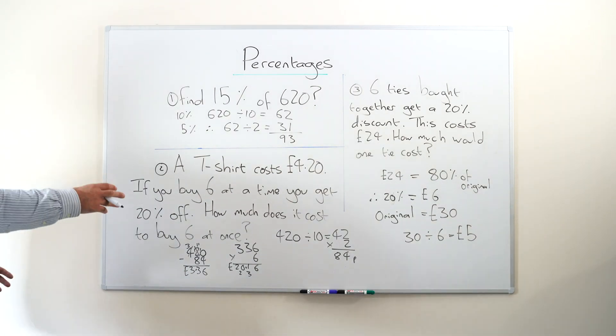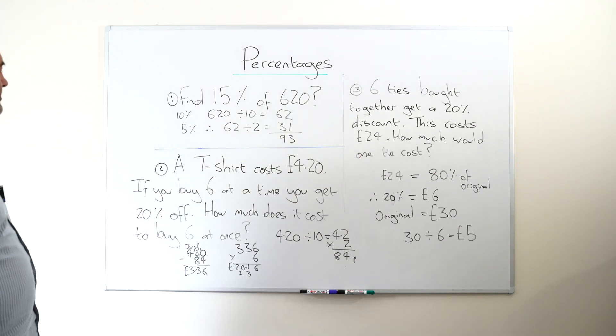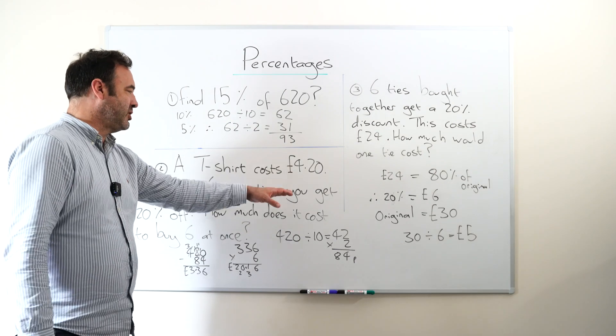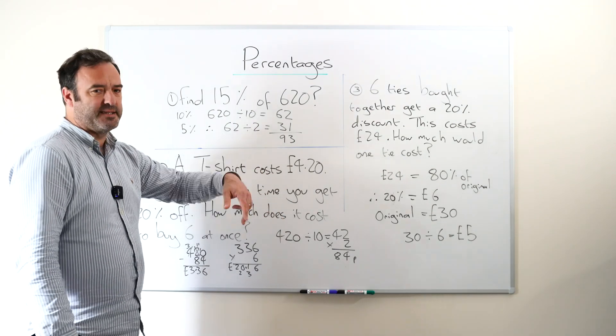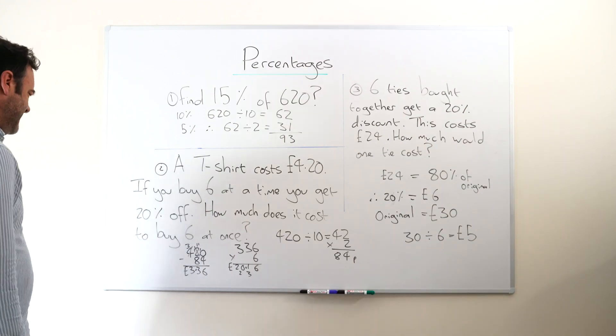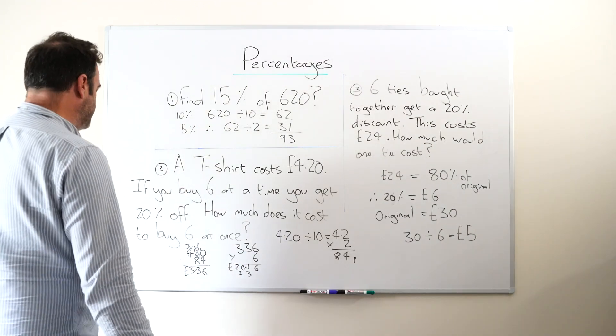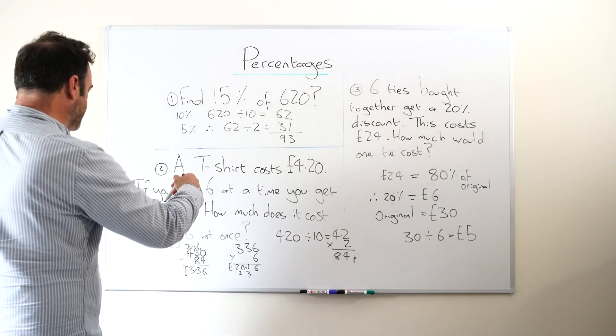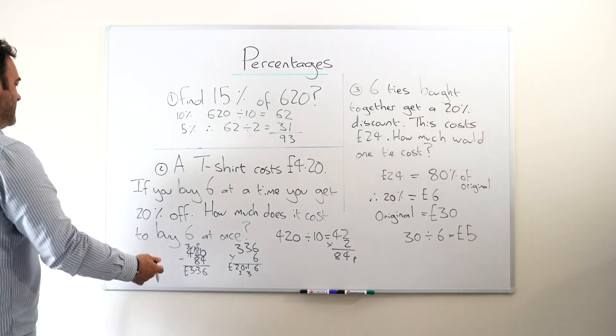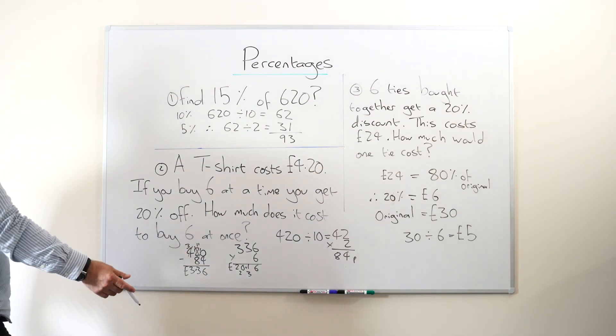Now, there's a couple of ways you could do this. You could get the total of all the shirts and take 20% off at the end, it doesn't matter. I think the way I did it here was I took 20% off each t-shirt then multiplied it by six.